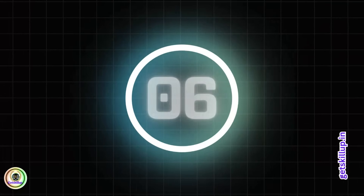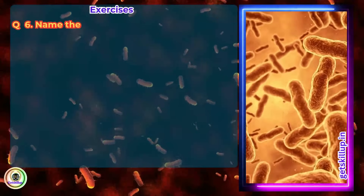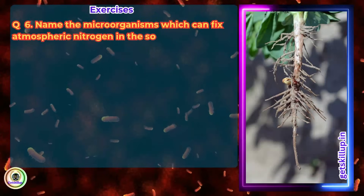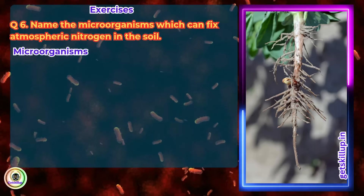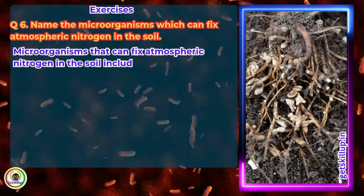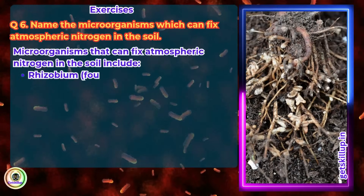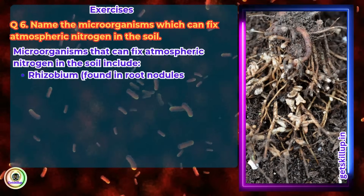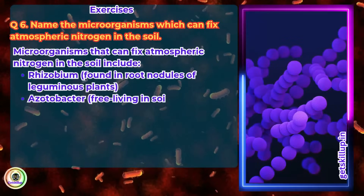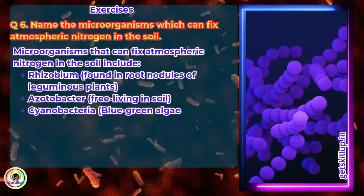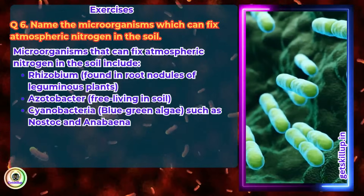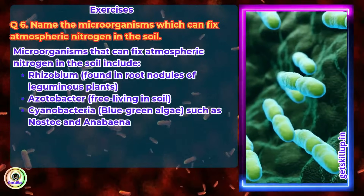Question 6. Name the microorganisms which can fix atmospheric nitrogen in the soil. Answer: Microorganisms that can fix atmospheric nitrogen in the soil include Rhizobium, found in root nodules of leguminous plants; Azotobacter, free-living in soil; and Cyanobacteria — blue-green algae such as Nostoc and Anabaena.